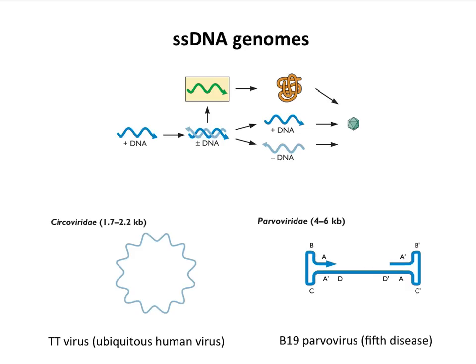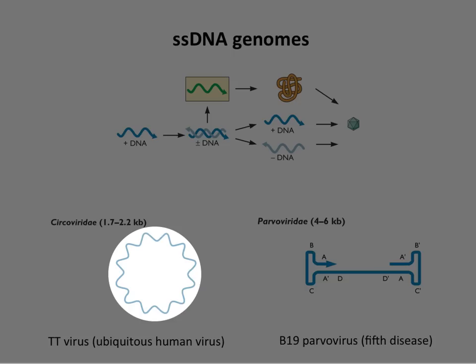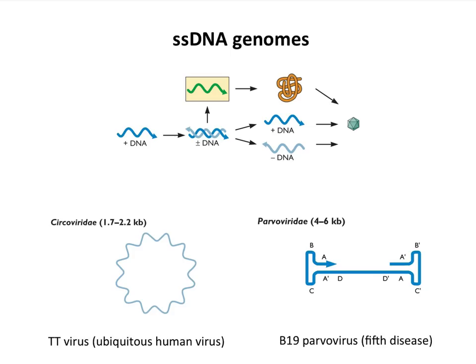There are two different genome configurations for single-stranded DNA viruses. Circoviruses have 1.7 to 2.2 kb single-stranded circular DNA genomes — very small, encoding only one or two proteins. An example is TT virus, which has infected 90% of people. If you took blood samples, 90% would have antibodies to this virus, but we have no idea what it does — probably doesn't cause any disease, maybe it helps us. There are related forms infecting other animals, and some serious diseases of chickens are caused by circoviruses.